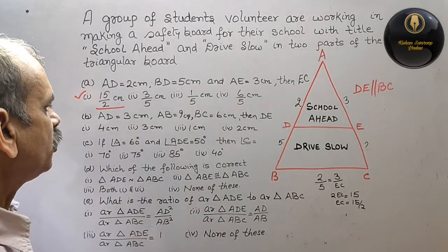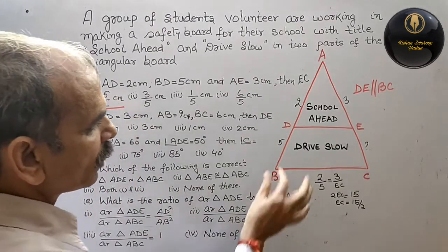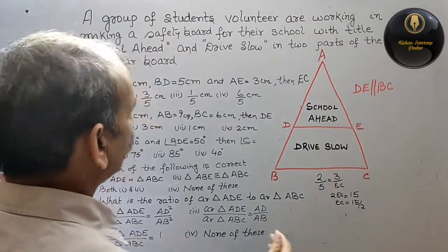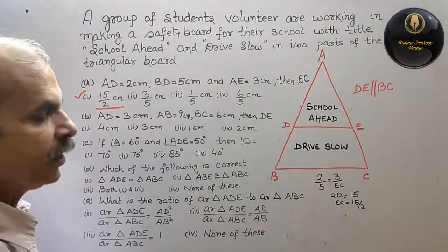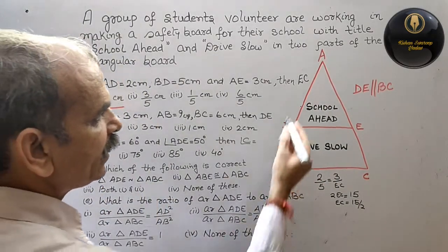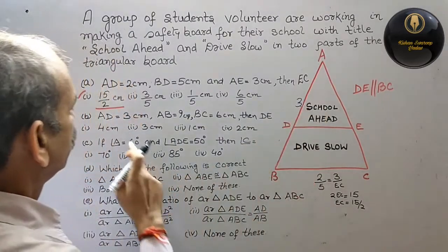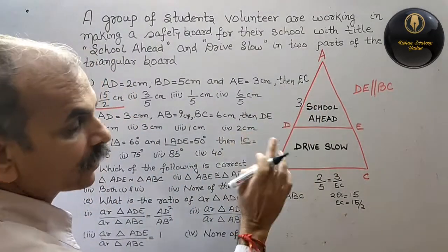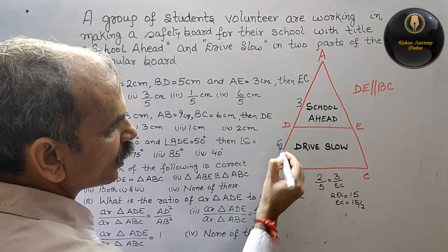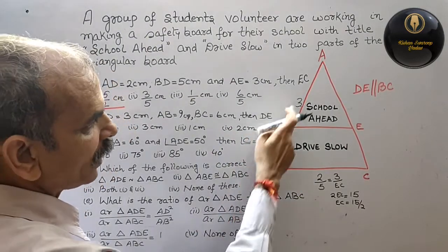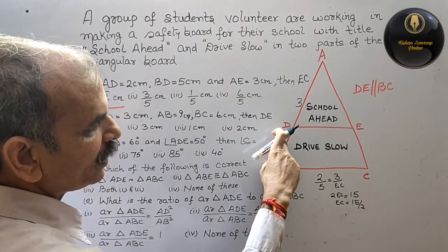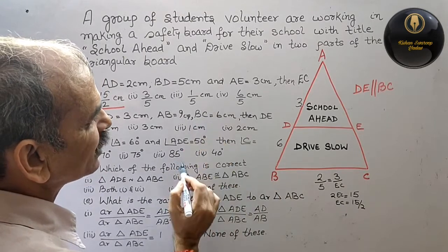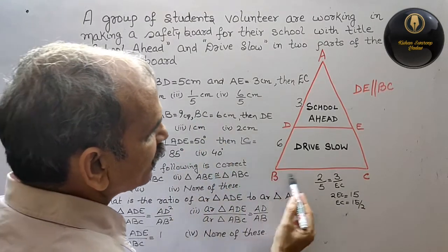Now next. AD is 3, AB is 9. A to B is 9, so 9 is total, that means you have 6. 9 minus 3 is 6, so DB is 6. Then BC is equal to 6.